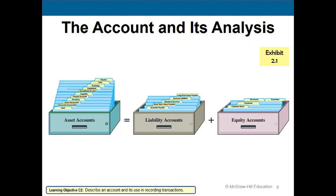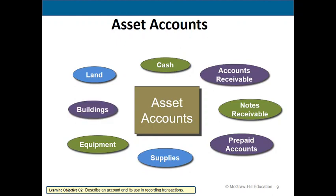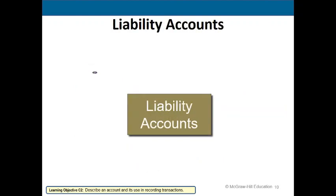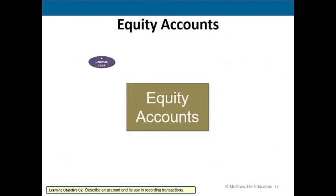Almost every company will have accounts payable — purchases made on credit — and may also have notes payable, unearned revenue, accrued liabilities, and long-term notes payable. Under equity accounts, you have common stock, dividends, revenues, and expenses. Here are examples of asset accounts, liability accounts, and equity accounts.